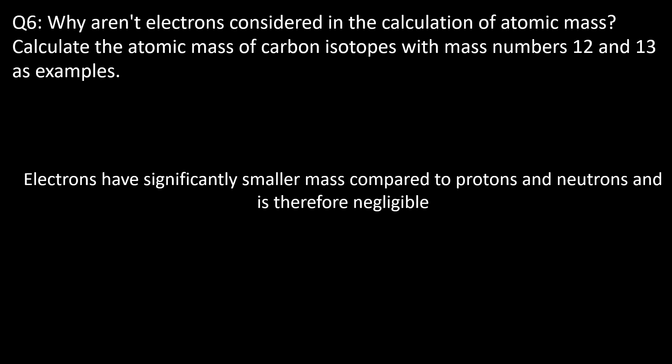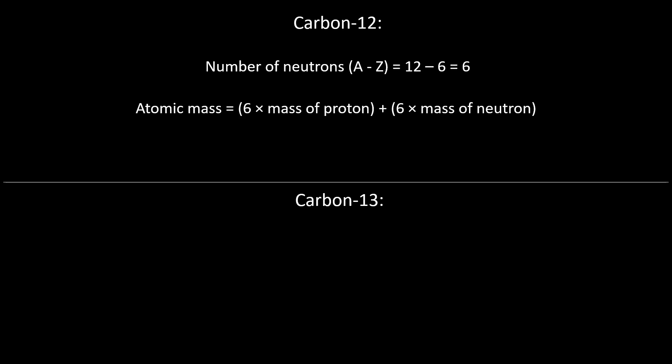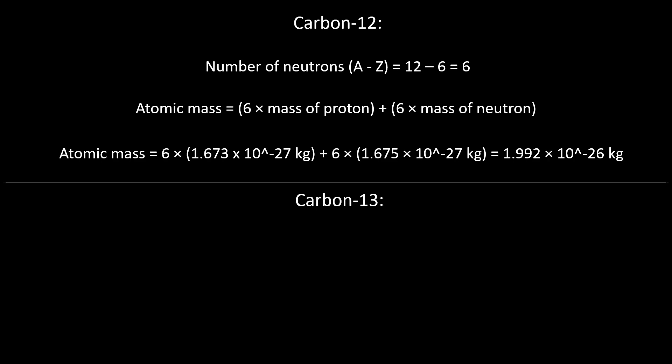For carbon-12, which has an atomic number of 6 and a mass number of 12, we can find the number of neutrons by subtracting the atomic number from the mass number, which gives 6. So there are 6 neutrons. The atomic mass equals 6 times the mass of a proton plus 6 times the mass of a neutron: 6 × 1.673 × 10⁻²⁷ kg plus 6 × 1.675 × 10⁻²⁷ kg, which gives us 1.992 × 10⁻²⁶ kg.